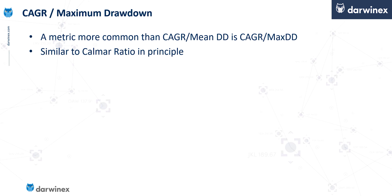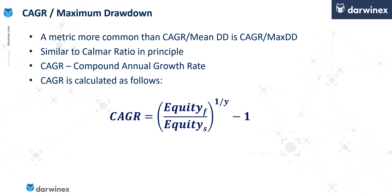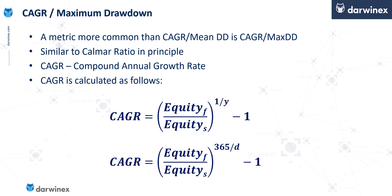If we take a look at what the compound annual growth rate is and how it's calculated, you can see that it needs the final equity at the end of the backtest, which gets divided by the starting equity. That is then raised to the power of one over the number of years that the backtest took place over, and then one is taken from that total. Alternatively, this can be calculated on a number of days basis as shown here. This represents the reward component.